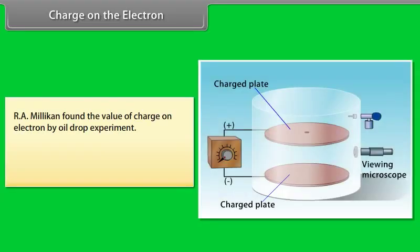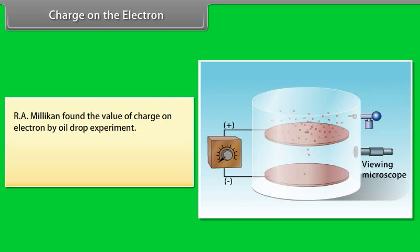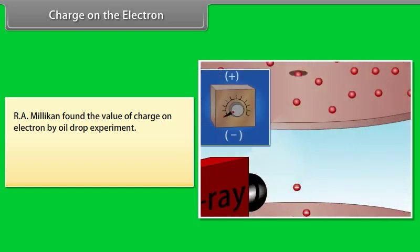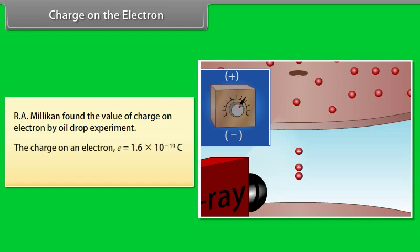Charge on the electron: R.A. Millikan found the value of charge on the electron by the oil drop experiment. Oil droplets enter the apparatus through a small hole and fall between two charged plates, observed through a microscope. X-rays ionize air molecules, and one or more electrons may be absorbed by a droplet. The charge on an electron e is equal to 1.6 × 10⁻¹⁹ coulomb. The mass of the electron me is equal to 9.31 × 10⁻³¹ kilograms.